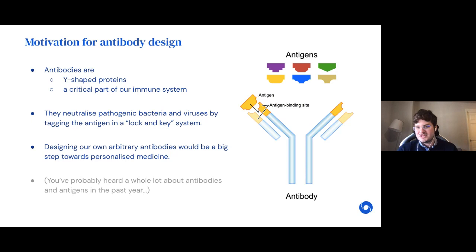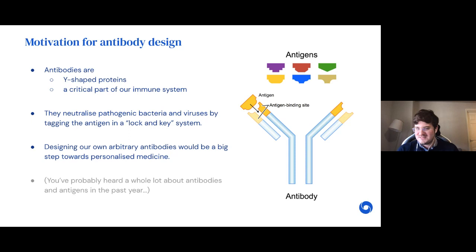Antibodies are y-shaped proteins forming a critical part of our immune system. In a lock-and-key system they bind to parts of pathogenic bacteria or viruses, tagging them so the immune system can destroy them. If we could design our own arbitrary antibodies for any antigen, that would be a huge step towards personalized medicine. Over the past year you've probably heard a lot about antibodies and antigens even if you're not in this field, simply because of all the COVID-related implications.